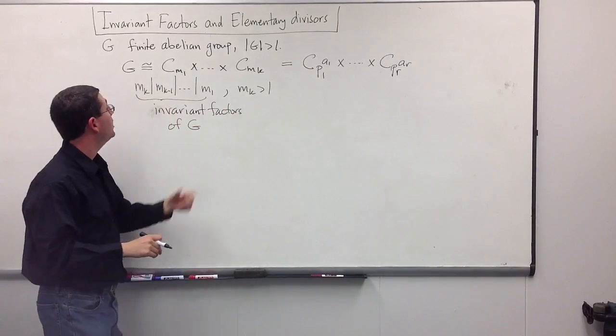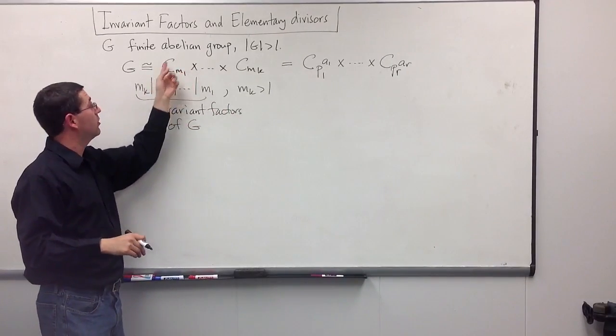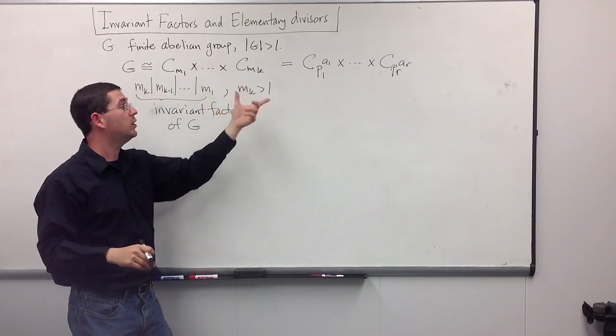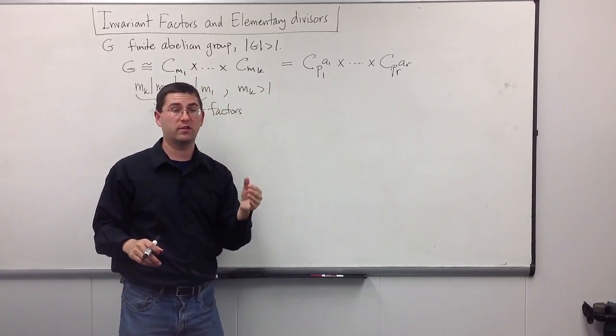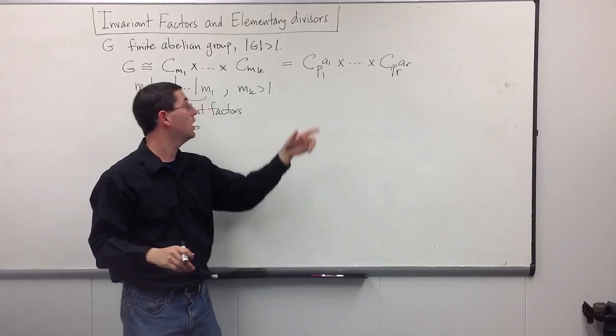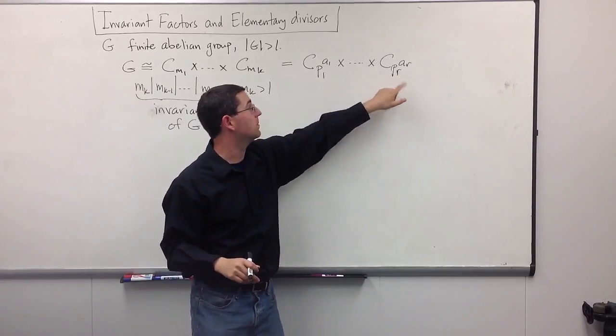And these primes actually may not be distinct. For instance, you may have a C2 that shows up here and another C2 that shows up down the road. You're not allowed to combine those. C2 cross C2 is not the same as C4. So, these may not be distinct primes that show up.